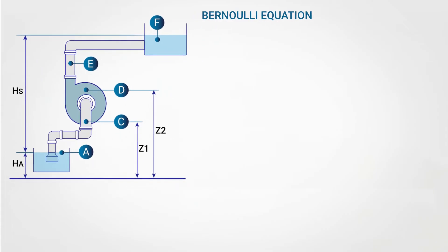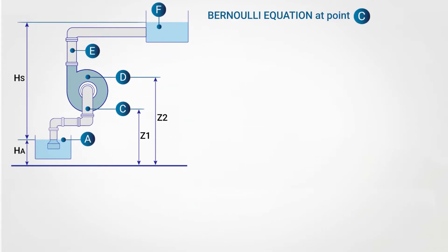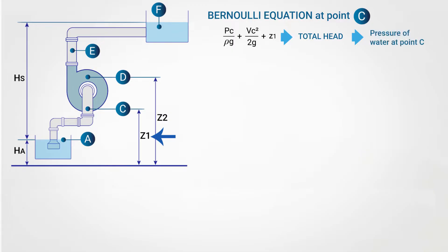Applying the Bernoulli equation at point C, I get: PC divided by ρg (pressure head), plus VC squared divided by 2g (velocity head), plus the height Z1. This gives the total head — that is, the total pressure of water at point C while it is entering into the pump.